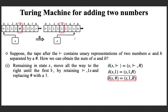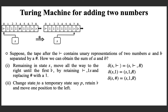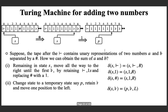At this point, we have one extra one — three plus two is five but we have six. The idea is to move back and change the last one to a blank. Change the state to a temporary state p, retain the blank and move one position to the left. Then, from state p, if reading a one, replace it with a blank and change to the accepting state t.